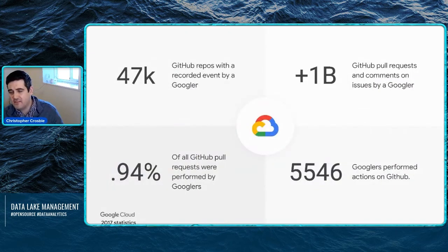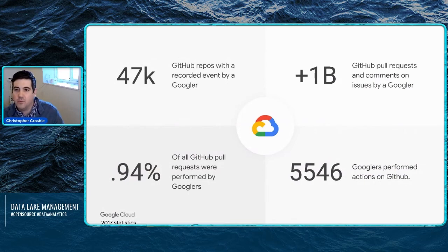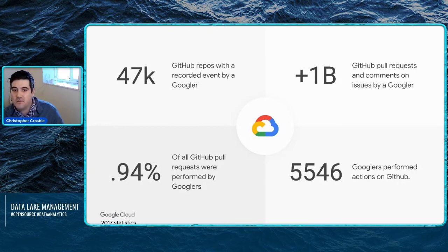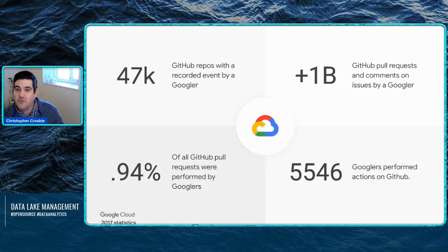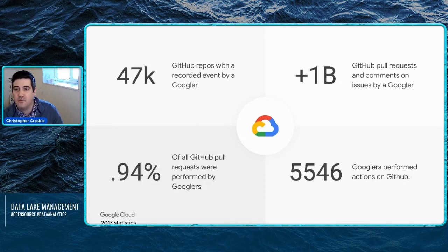Google is very actively contributing to open source — almost 1% of all GitHub pull requests were performed by Googlers. There are over 5,000 Googlers that have performed actions on GitHub. That's a lot, considering that's a big chunk of our employees — almost all of our engineers are somehow contributing back to open source.